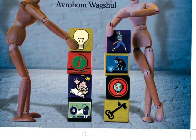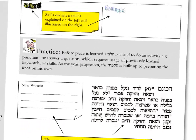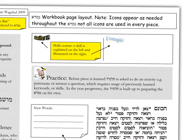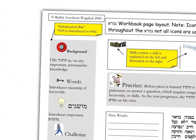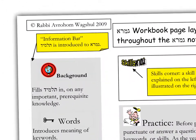Here are some basic tools and icons that you find throughout the book. Here's a page explaining the different features of the book. Basically, skills are taught, examples are given, and students get to practice in the text. Helpful information bar features are on the side of each sugya.